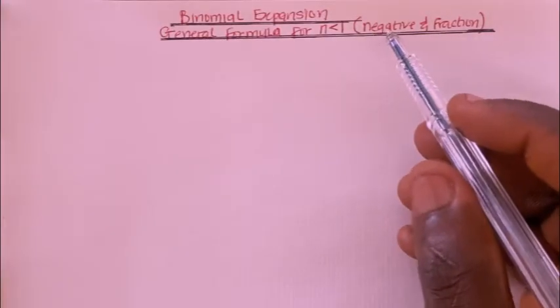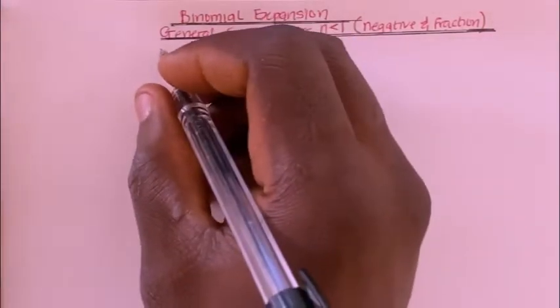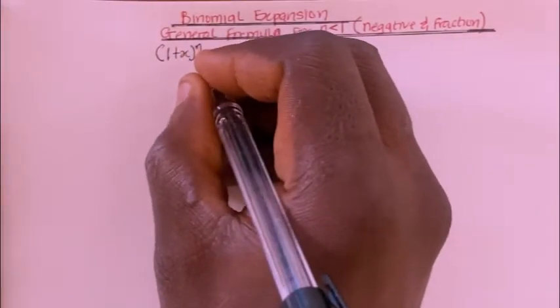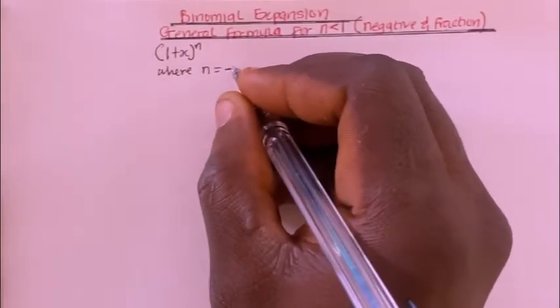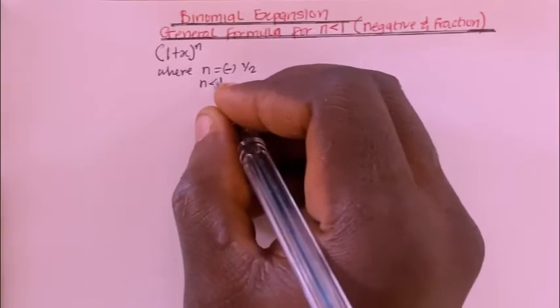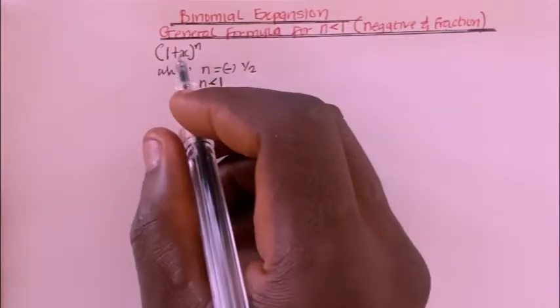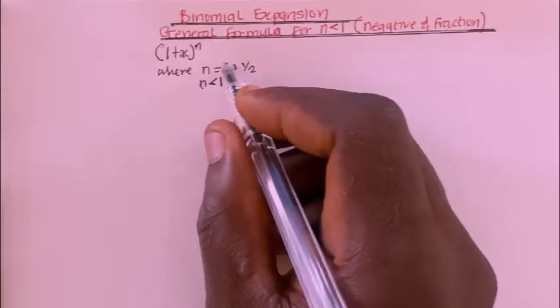Hi friends. In this video I'm going to talk about binomial expansion and show you the general formula for expressions where n is less than 1, or where n might be negative or a fraction. Whenever you come across any binomial of the expression 1 plus x raised to the power of n, where n can be a negative integer or fraction, we are going to use a special expression.